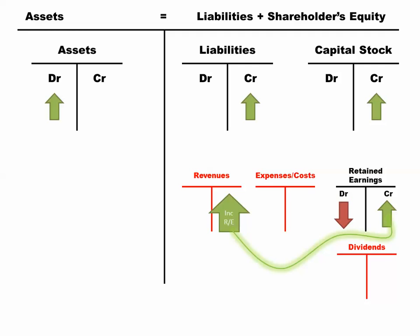However, expenses decrease retained earnings. Expenses and costs lower the worth of the business, so a debit to retained earnings — also known as a debit to expenses — will increase your expenses or your cost accounts, like cost of goods sold. Dividends are exactly the same way: they decrease the worth of the business, so a debit to them increases dividends.